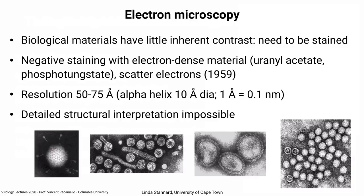You have to use an electron-dense material because in electron microscopy you're bombarding the sample with electrons — much smaller than light particles, so the resolution is greater. But typical dyes used with light microscopy can't be used with electron microscopy, so you use something like uranyl acetate or phosphotungstate — we call these electron dense, they scatter electrons. You're basically coating the particle with the stain and the electrons bounce off it. The resolution is not great — about 50 to 75 angstroms. Since the alpha helix is about 10 angstroms in diameter, you can't get any detailed structural interpretation from negative-stained EM. But in the early days, pictures like this were taken and gave us a lot of information — for instance with adenovirus, they first saw fibers sticking out of the particle.